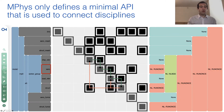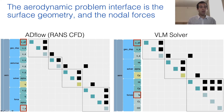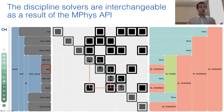To show you how we can swap aerodynamic solvers, I'm going to focus on the structure of how an aerodynamic group looks. On the left, we have ADflow, a RANS-CFD code, and on the right, we have a VLM solver. The aerodynamic problem interface is the surface geometry and the nodal forces. Even though internally these two solvers do different computations, they both use the same interface, so we can use them interchangeably in this mPhys model.